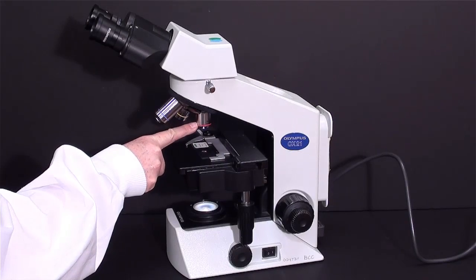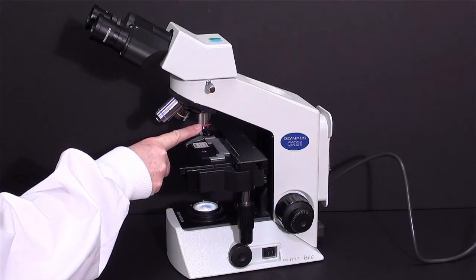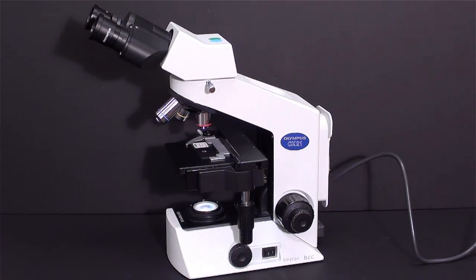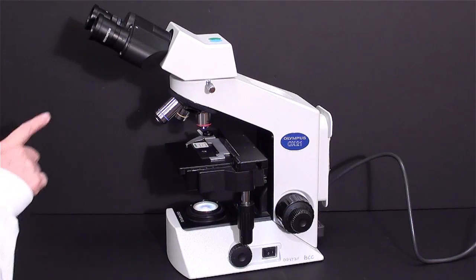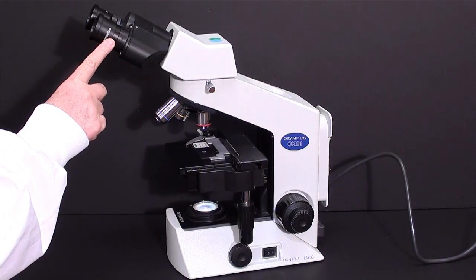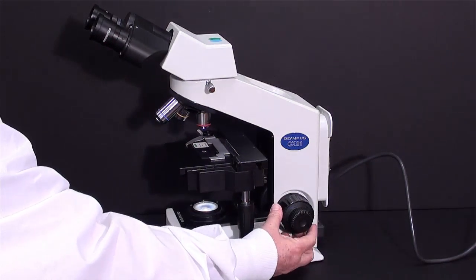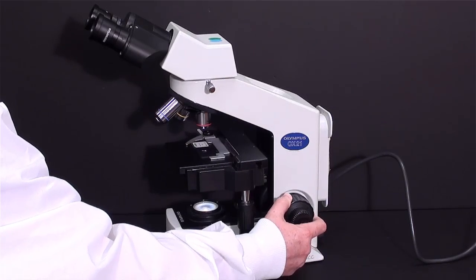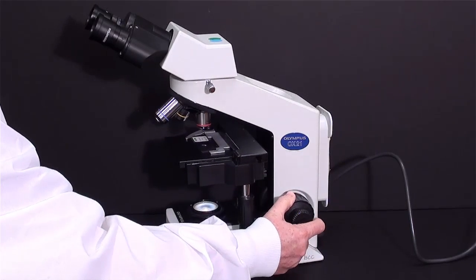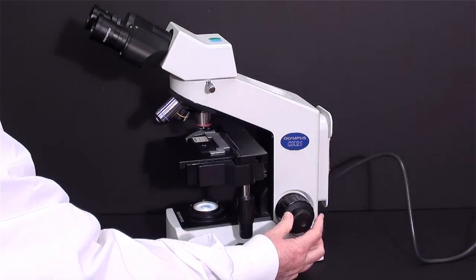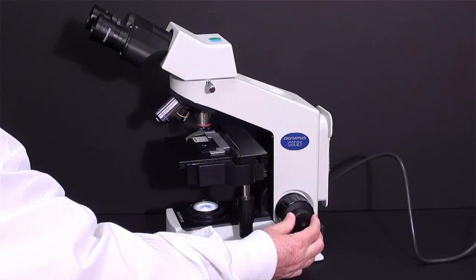Begin to look at it with the scanning lens. That's a short small lens. Look through the eyepieces to see what you can see. Use the coarse focus knob to bring the object into focus, and use the fine focus knob for fine adjustment.